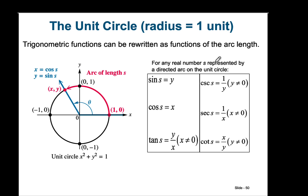For any real number s represented by a directed arc on the unit circle: sine of s is equivalent to the y coordinate — it's divided by the radius, but since the radius is 1, it's just the y coordinate. Cosine of s is the x coordinate. Tangent of s is y over x, where x cannot equal 0. And their reciprocal functions are cosecant, secant, and cotangent.